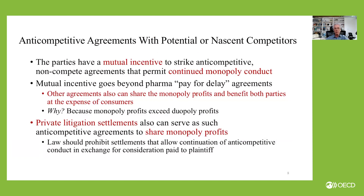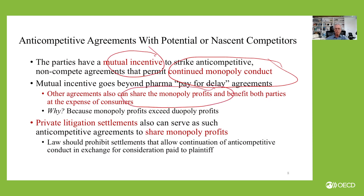What about anti-competitive agreements? Here you have the same issue: because monopoly profits exceed duopoly profits, the parties have a mutual incentive to strike an anti-competitive non-competition agreement that eliminates or reduces competition from the entrant and allows for continued monopoly conduct. That continued monopoly profit gives them a mutual incentive to agree because they can share the monopoly profits, benefiting both parties at the expense of consumers. In the U.S., where private litigation is very important, parties can settle private litigation in order to share the monopoly profits.